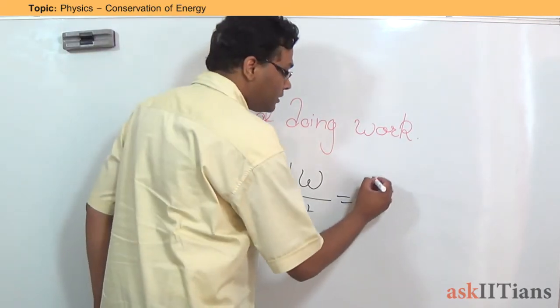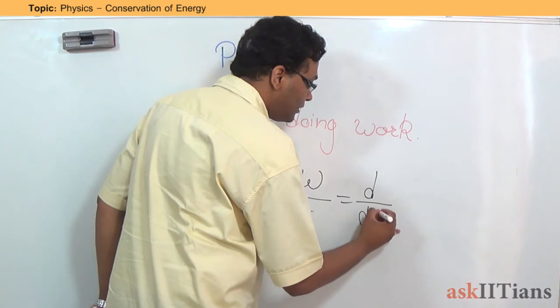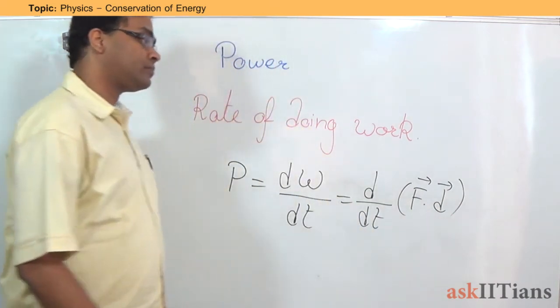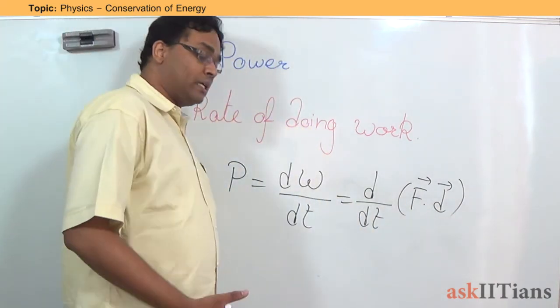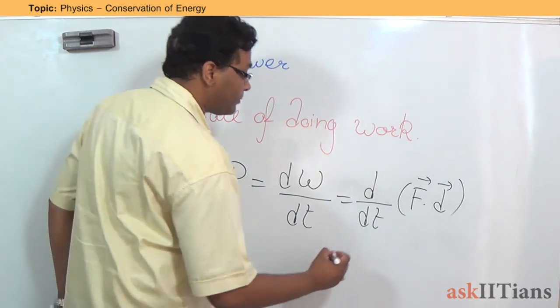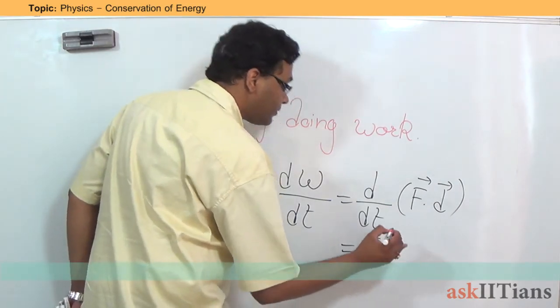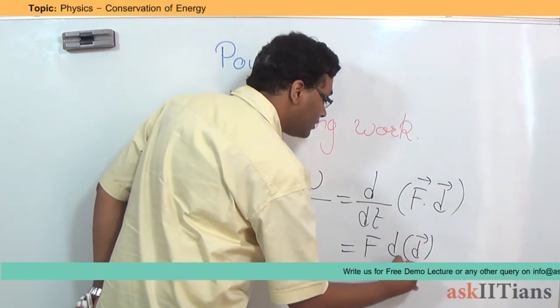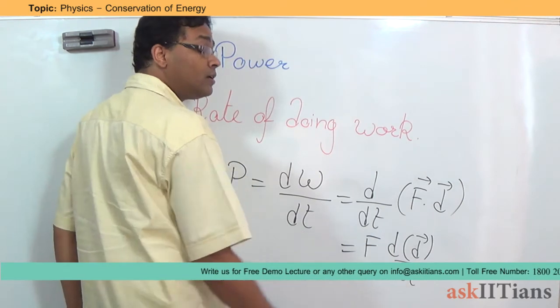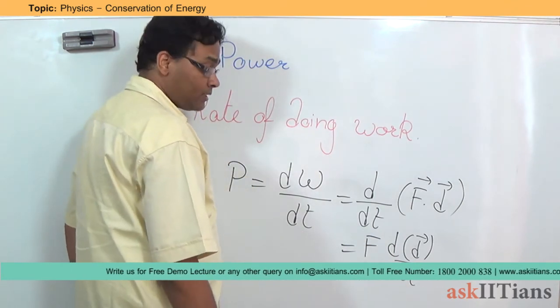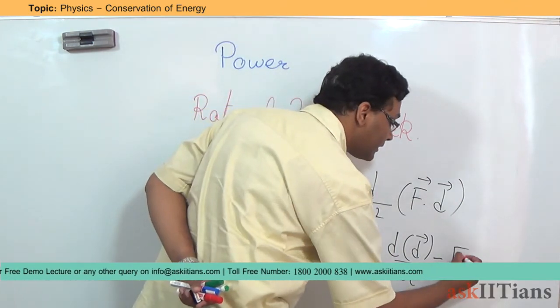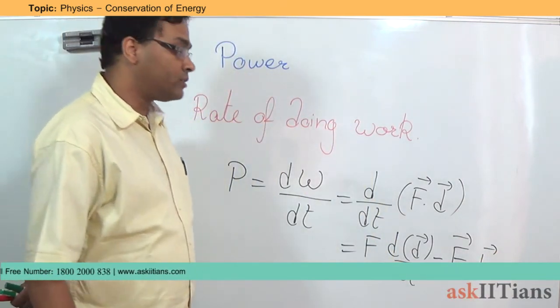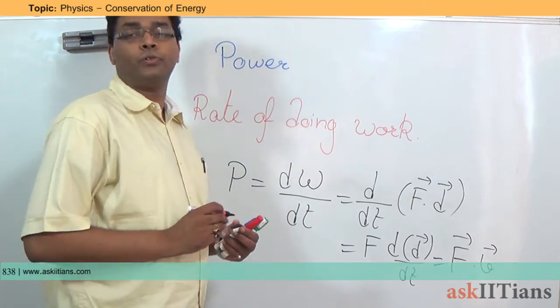Now how do you figure this out? Let me write this as d by dt force into displacement, F into dr. Force assuming that to be constant, we do not assume that the force is varying. So if I just take the force outside, so what will I get? I will get dr divided by dt. But this is what? Change in displacement over time that is nothing but the velocity. So I can simply say that this is going to be equals to force into velocity. So power is going to be represented as equals to force into velocity.